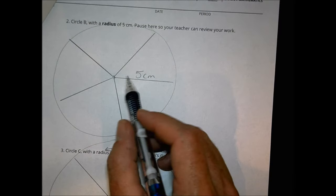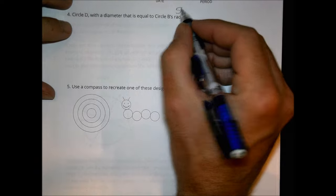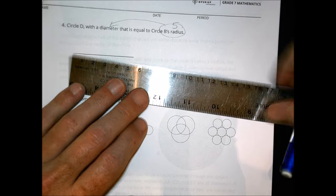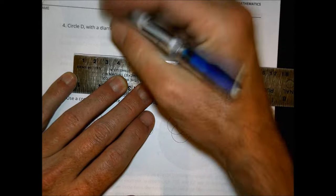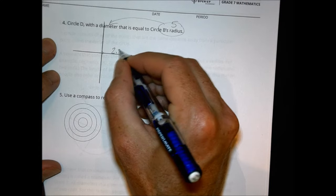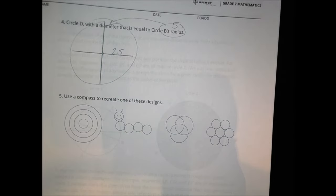For circle D, the diameter is equal to circle B's radius. Circle B had a radius of five centimeters, so now five centimeters becomes the diameter. The whole distance across the circle from zero to five will be the width. I find the midpoint at 2.5, draw a couple of lines, connect the dots, and we have our circle — with a diameter of five centimeters and a radius of 2.5.